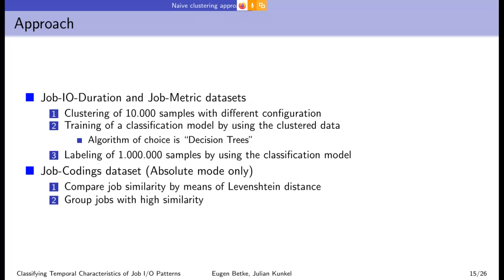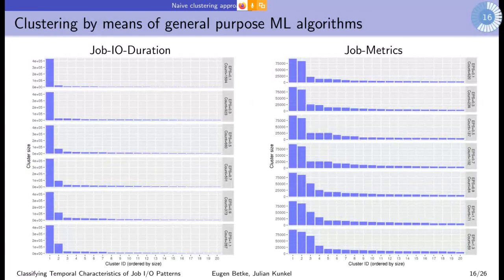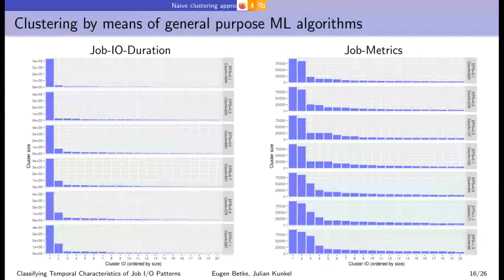In the second approach, we compared absolute mode codings. For that purpose we created a similarity function. This function is based on the Levenstein distance. It will be shown later on the slides. Finally, we grouped the jobs together. We grouped the jobs with highest similarity together.